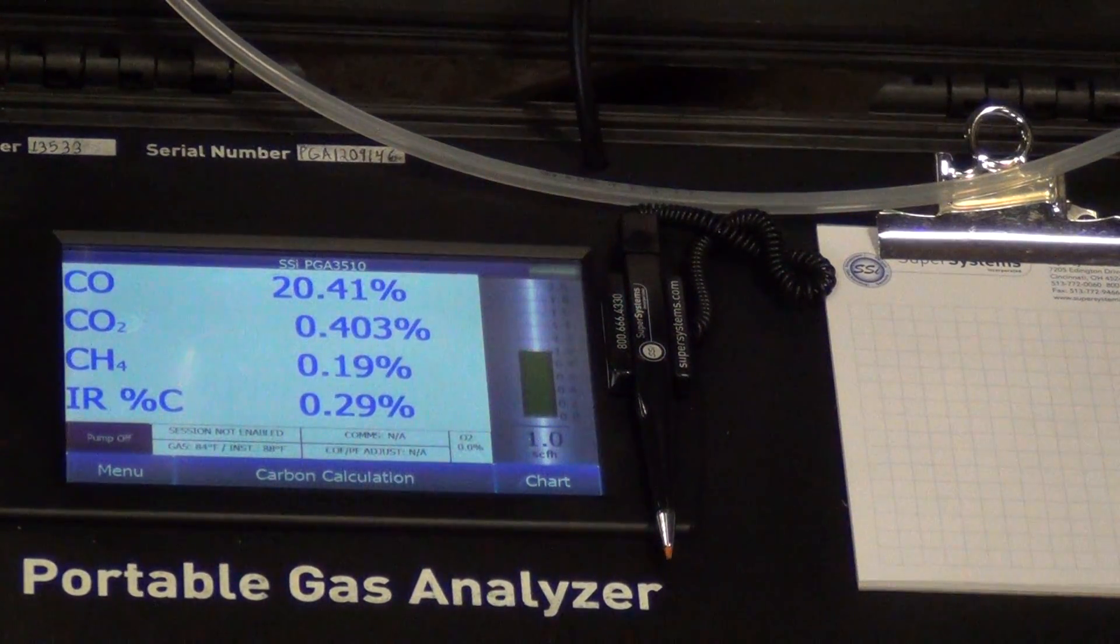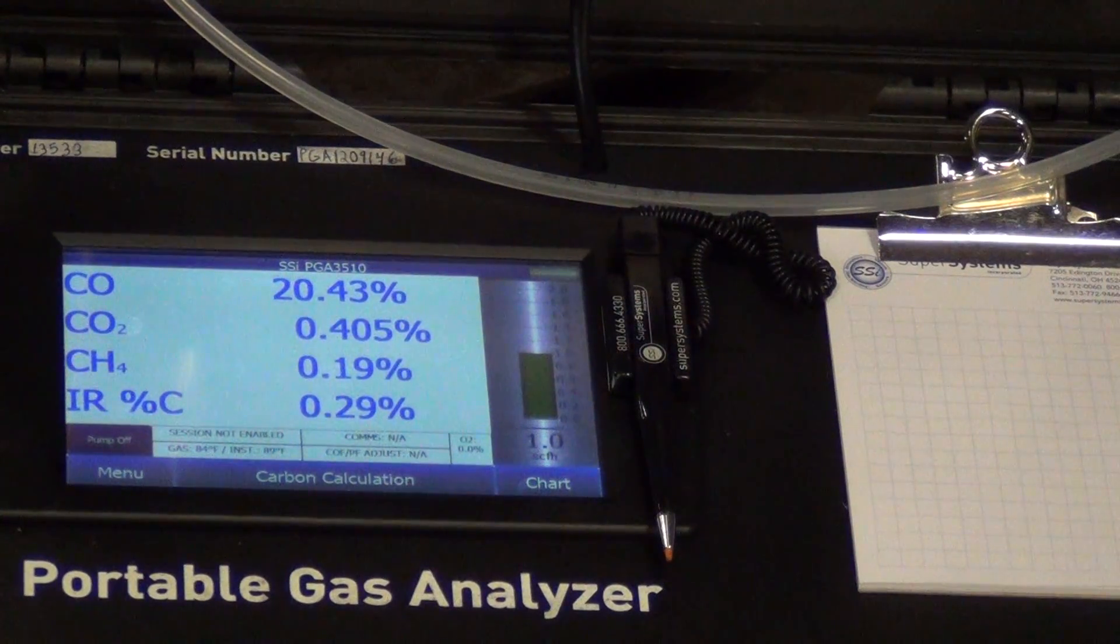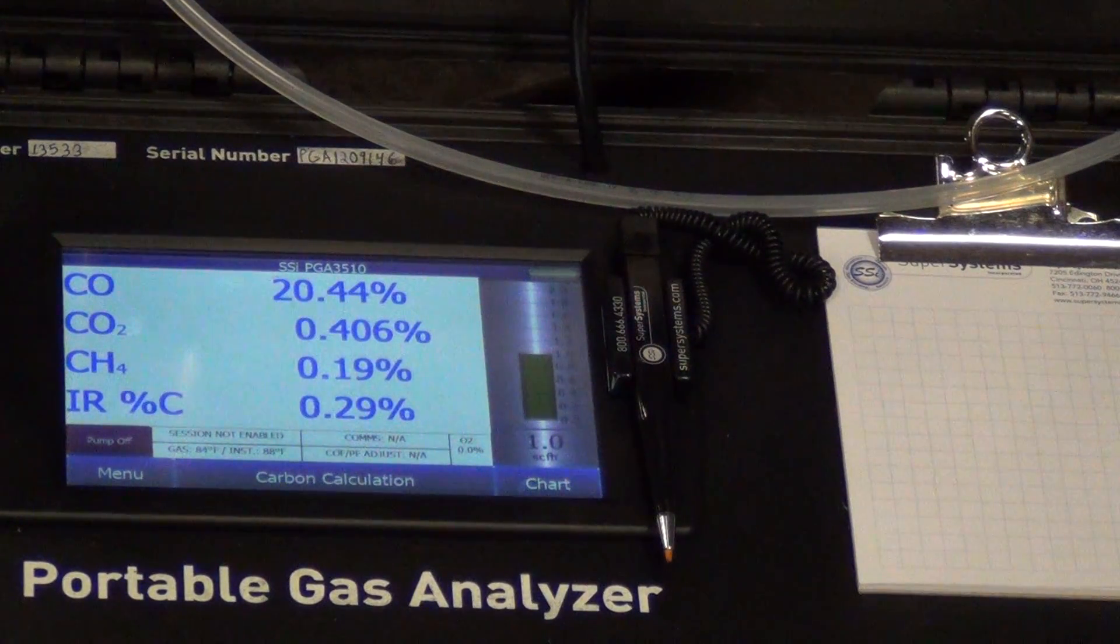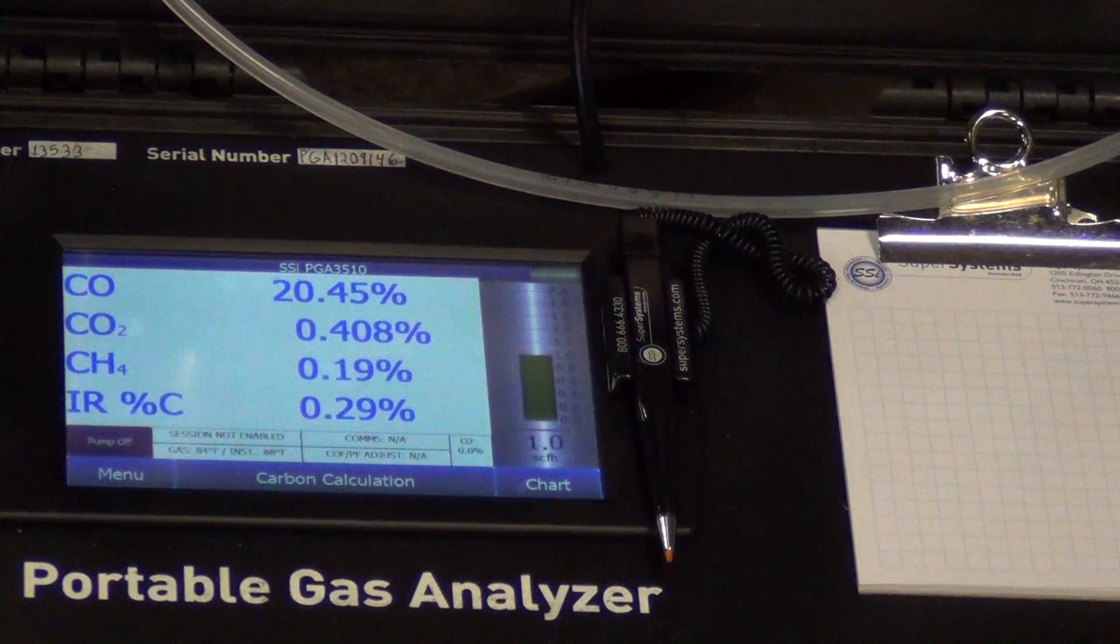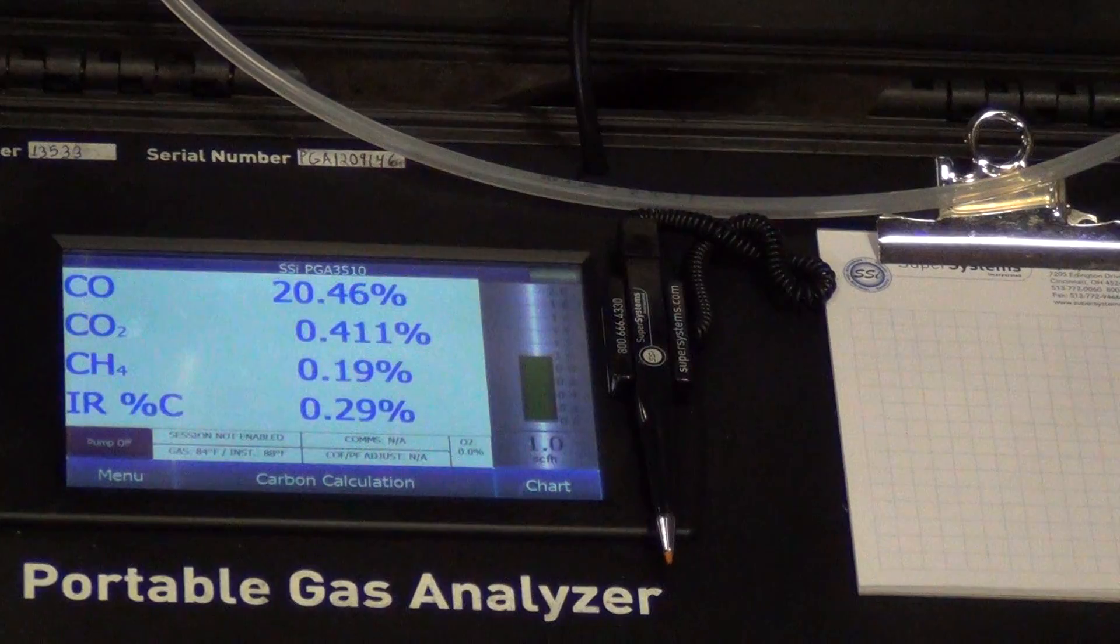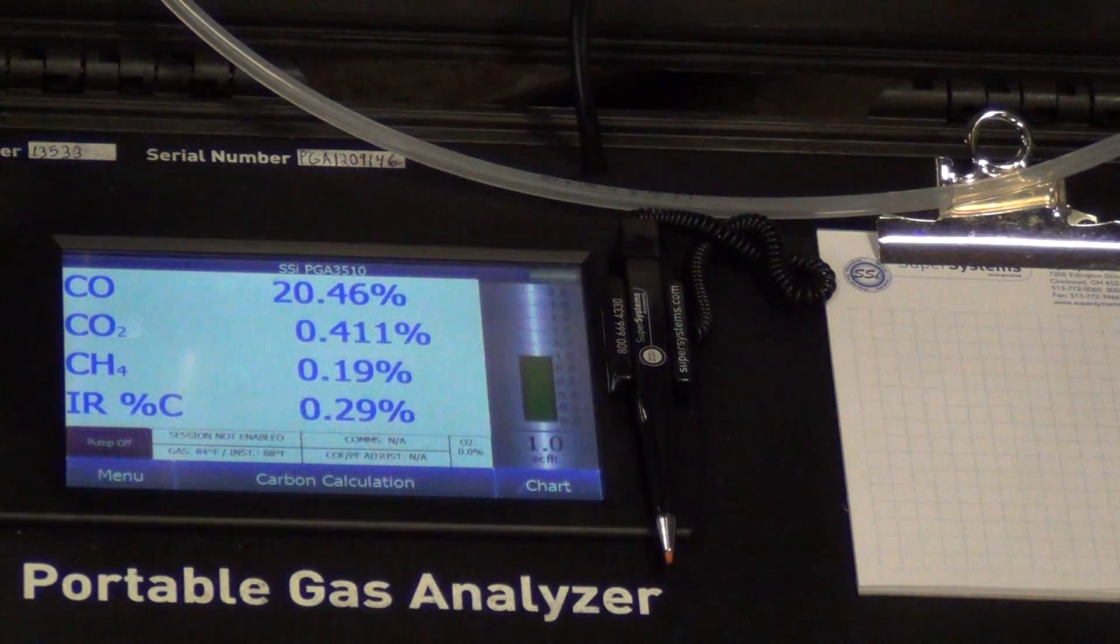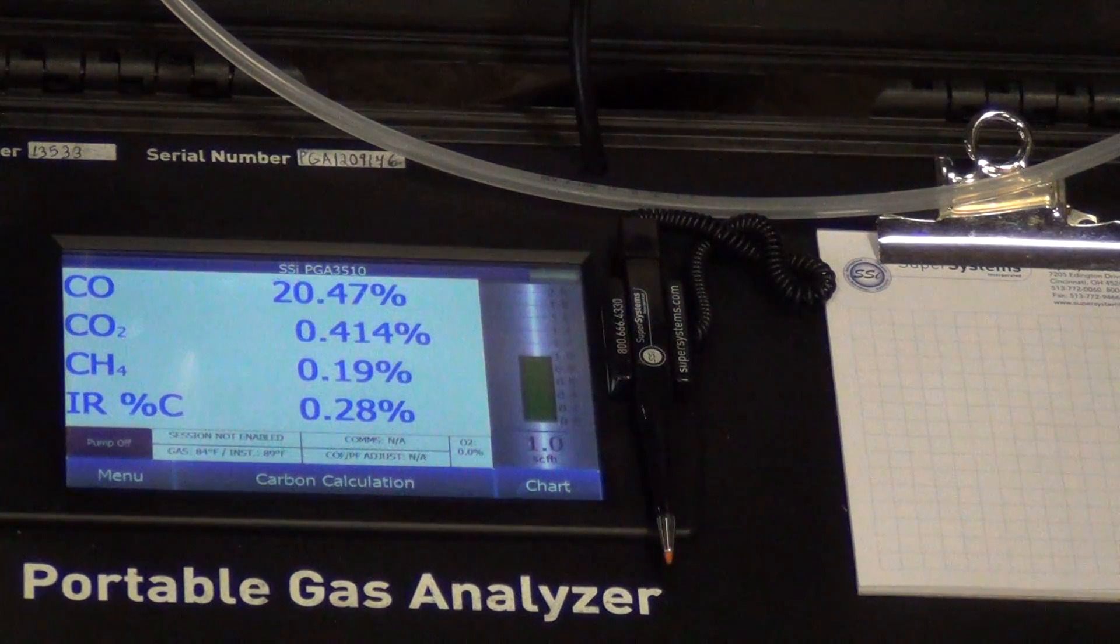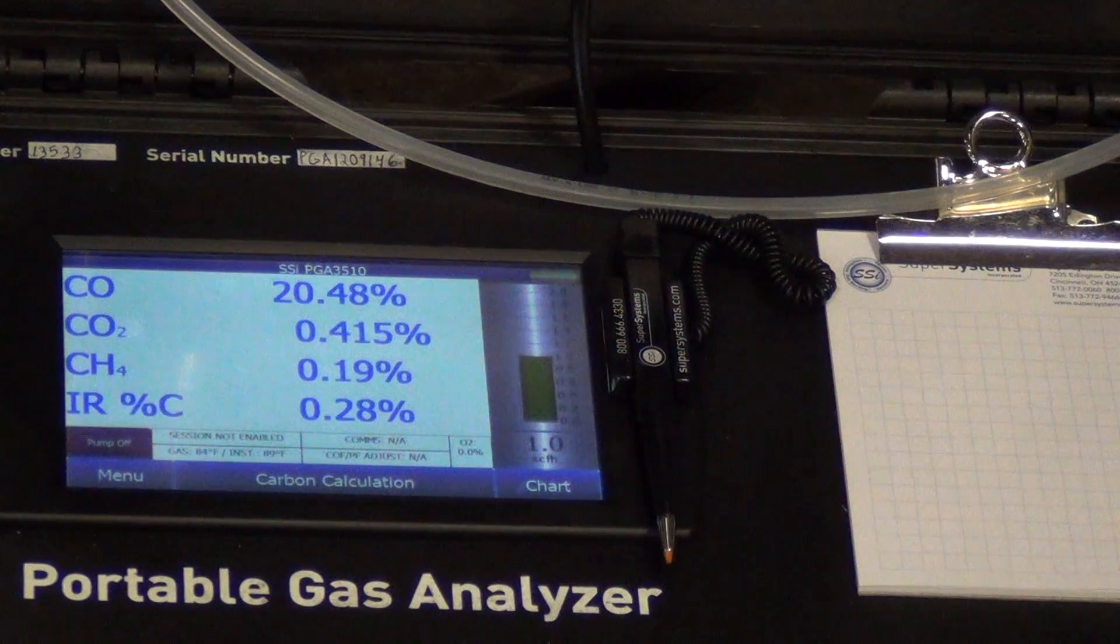You take CO2 times 100, it's going to be close to your dew point. So if I take 0.409 times 100, how about that? It's pretty darn close, right?